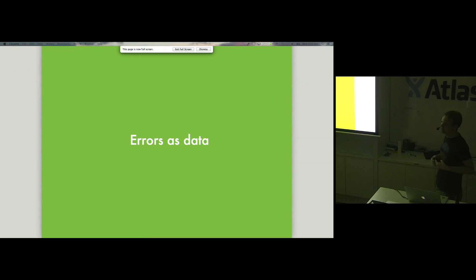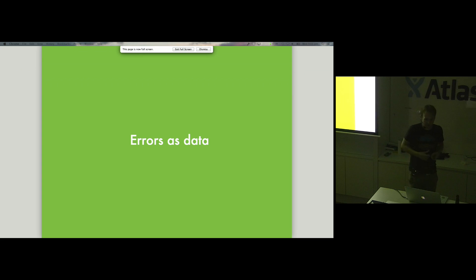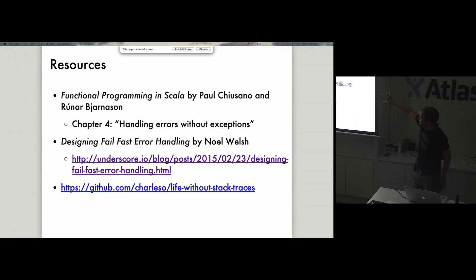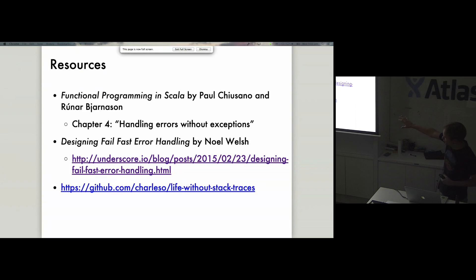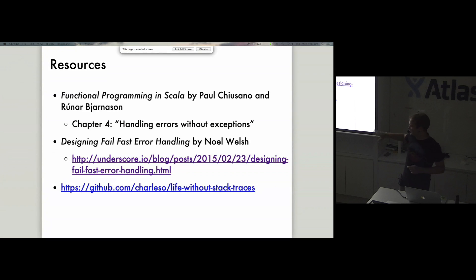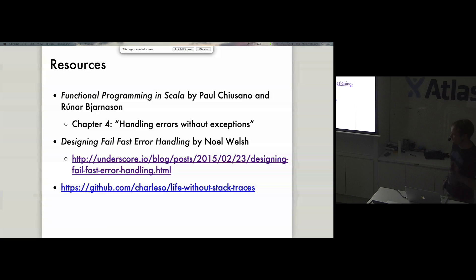That's basically it. The two main takeaways are: if you're in a functional programming world where you want your programs to do what they say they do every time, consider that partial functions are not real functions. Don't throw exceptions when you can just return data — that gives you a whole bunch of benefits. When you start returning your errors as data, you get future-proofing, more intelligent return codes, status codes, JSON, and so on. I highly recommend the Functional Programming in Scala book — there's a whole chapter on handling errors without exceptions.